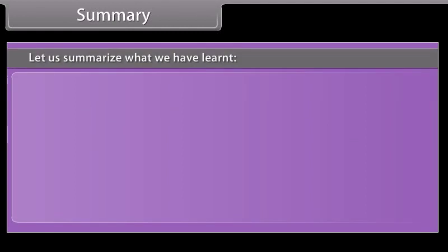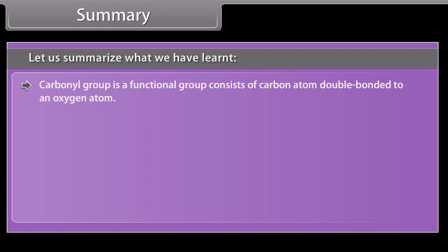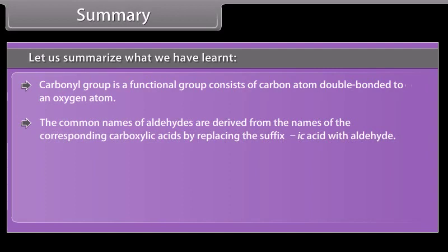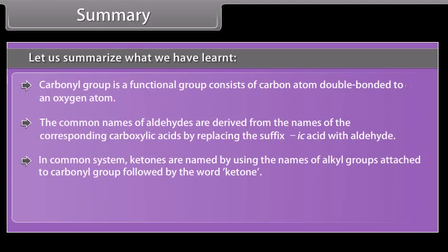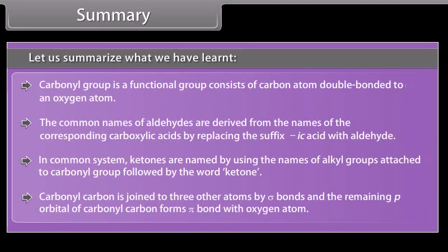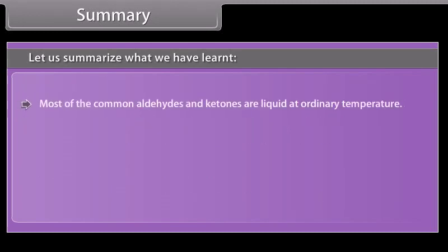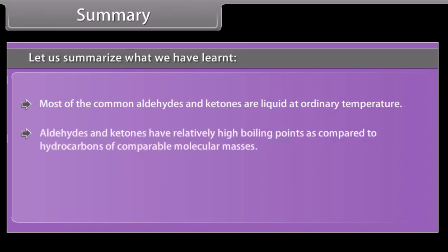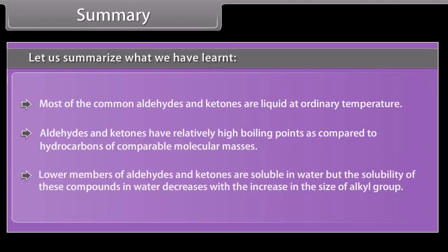Summary. The carbonyl group is a functional group consisting of a carbon atom double bonded to an oxygen atom. The common names of aldehydes are derived from the names of the corresponding carboxylic acids by replacing the suffix '-ic acid' with '-aldehyde'. In the common system, ketones are named using the names of the alkyl groups attached to the carbonyl group followed by the word 'ketone'. The carbonyl carbon is joined to three other atoms by sigma bonds, and the remaining p orbital of the carbonyl carbon forms a pi bond with the oxygen atom. Most common aldehydes and ketones are liquids at ordinary temperature with relatively high boiling points compared to hydrocarbons. Lower members are soluble in water, but solubility decreases with increasing alkyl group size.